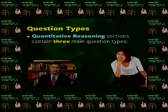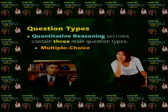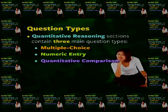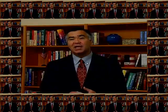The quantitative reasoning sections on the GRE contain three main question types: multiple choice questions, numeric entry questions, and quantitative comparison questions. As with the verbal reasoning sections, the quantitative reasoning sections will likely skip among question types. For example, you might have a section that begins with six quantitative comparisons, followed by four multiple choice items, followed by a numeric entry question, then five more multiple choice questions, and so on. Again, the exact sequence is difficult to predict.